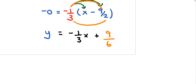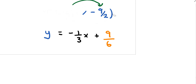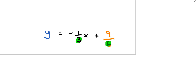The denominators are 3 and 6, and the least common multiple between 3 and 6 is 6. So multiply everything by 6: 6 times y is 6y, and multiply each term on the right by 6 as well.